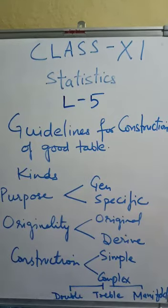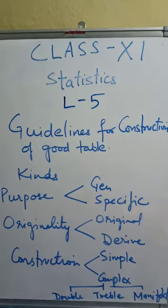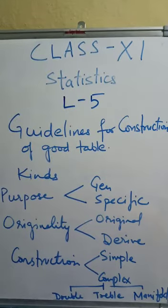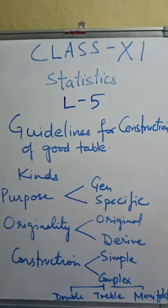A complex table is one which shows more than one characteristic of the data. These are of three types: double or two-way table, treble table, and manifold table.